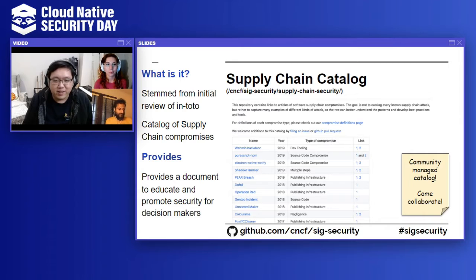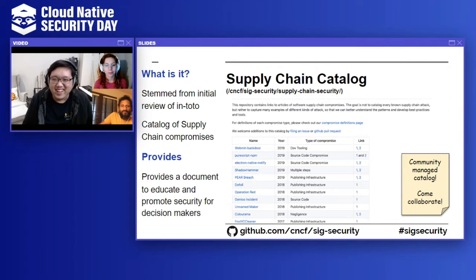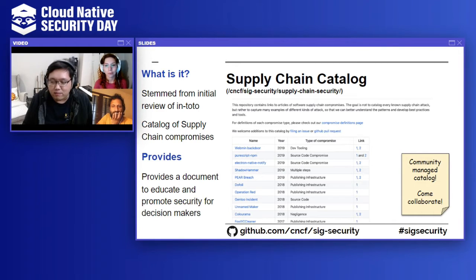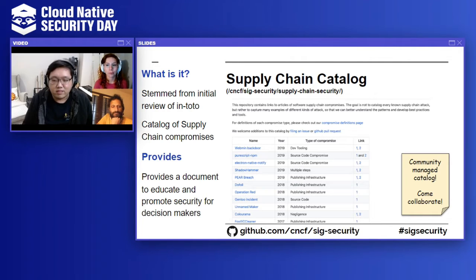Another big thing that we have is the supply chain catalog. This was something created a while back by Santiago and a couple of others. There was a lot of interest in supply chain security today — we even had a breakout hallway track session on that. There was even a paper called The Backstabbers Knives Collection or something — it's definitely something to read. This catalog is community maintained, so if you see something missing or we can make improvements to it, please don't hesitate to create a PR against it.